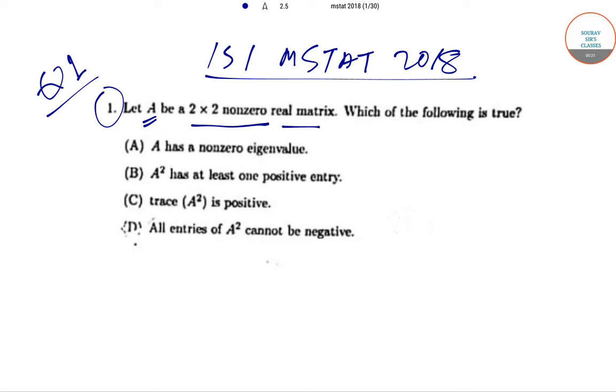2 by 2 nonzero real matrix. Which of the following is true? Option A: A has a nonzero eigenvalue. Option B: A² has at least one positive entry. Option C: trace of A² is positive.